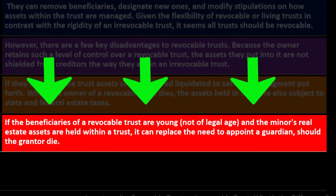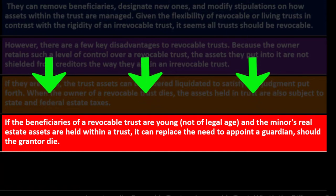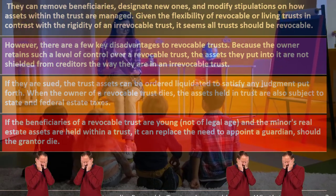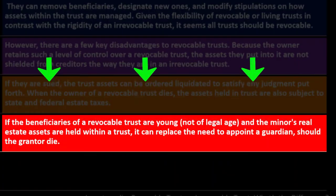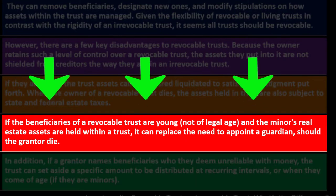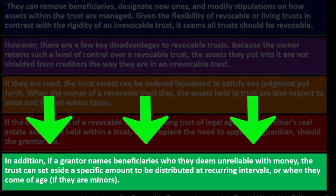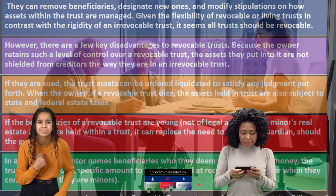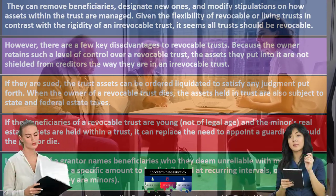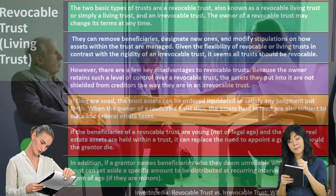If the beneficiaries of a revocable trust are minors, the trust can replace the need to appoint a guardian should the grantor die, since a minor may have difficulty legally owning property. Additionally, if a grantor names beneficiaries deemed unreliable with money, the trust can set aside a specific amount to be distributed at recurring intervals or when they come of age, allowing for controlled disbursement of assets.